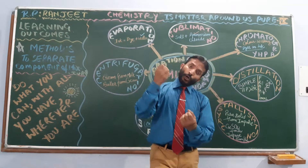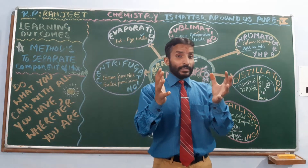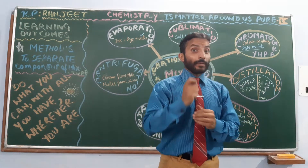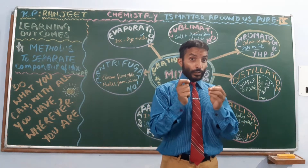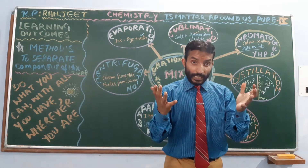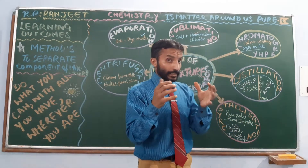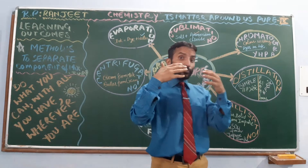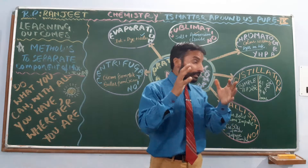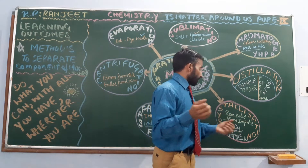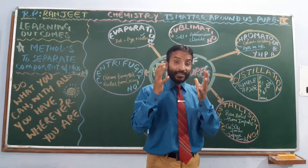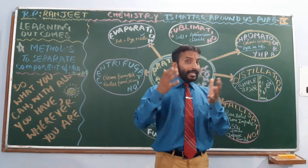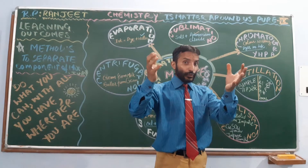Next is crystallization. How to separate a pure solid from its impure sample? For example, copper sulfate is present in impure solid form, but I have to remove the impurities. The process is known as crystallization — we prepare pure crystals from it. Let us see the process experimentally with equipment.